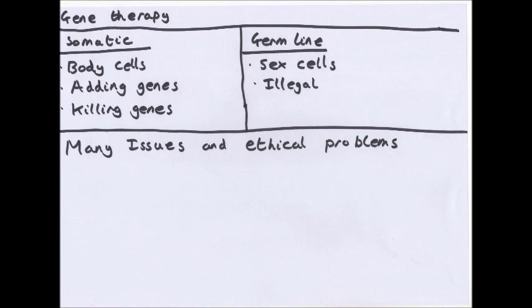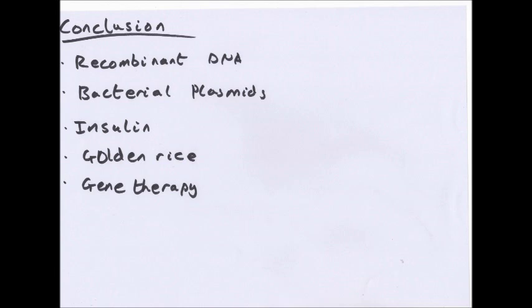The ethical issues around genetic engineering are something that's easier to read than to have explained - it's common sense really. To summarise: recombinant DNA is from more than one species; we use bacterial plasmids; the examples we need to know about are insulin and golden rice; and we use gene therapy to cure genetic disorders. That is genetic engineering.